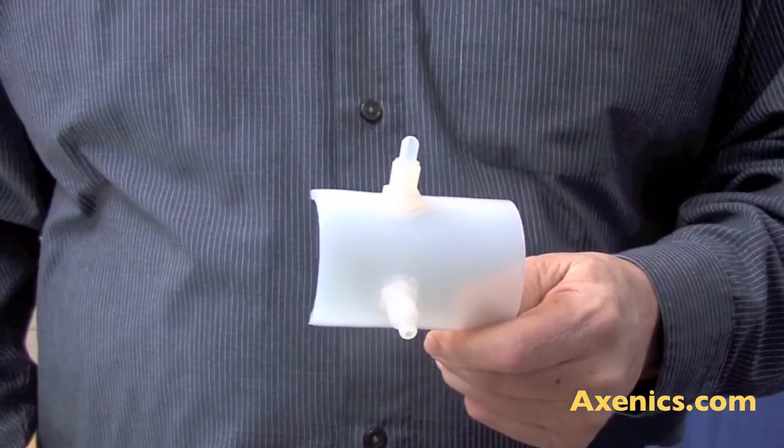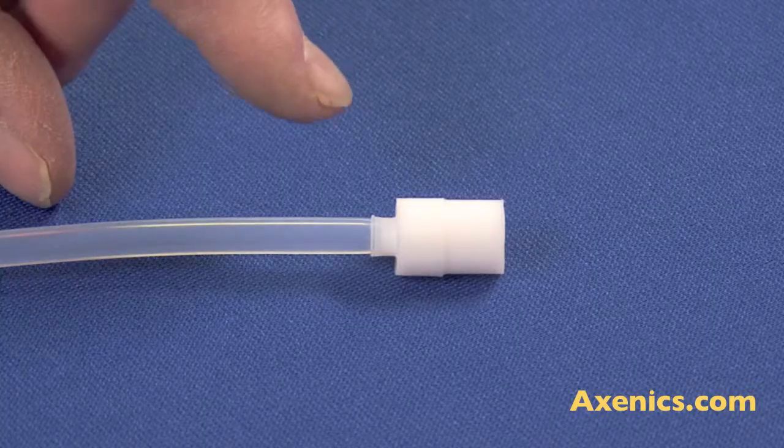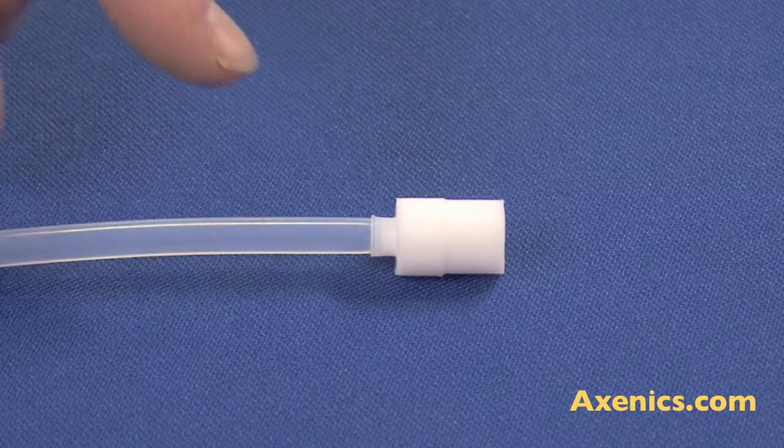This is another example of that similar welding to the side of the pipe. It's a custom weld of quarter inch tubing, PFA to PTFE material.